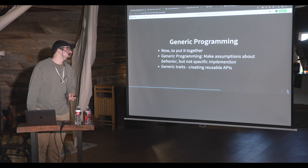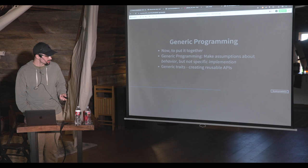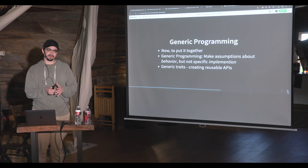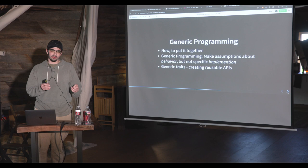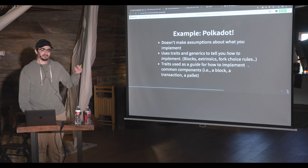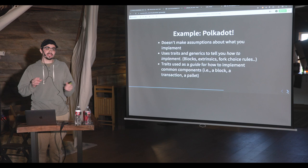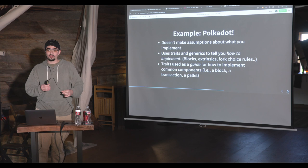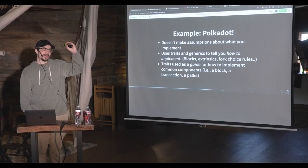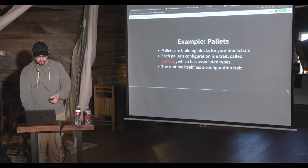Let's put it together and go back to generic programming. What is generic programming? It's making assumptions about behavior, but not really the implementation itself — here's how I want this thing to act, but I don't care about what it looks like. Generic traits let us create reusable APIs. A good example in use is Polkadot: blocks, transactions, fork choice rules, consensus — all these are generic by nature. You can customize them because they're generic. You can say 'I want my block to look like this, I want my fork choice rule to look like this.' Traits act as the guide: I know it will implement these methods, so the API always stays the same.